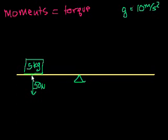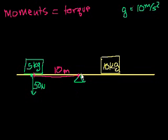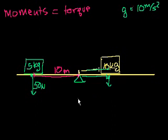And let's say the moment arm distance here is 10 meters. Now let's say I have a 10 kilogram mass and I want to place it some distance d from the fulcrum, or axis of rotation, so that it completely balances the 5 kilogram mass. So how far from the axis of rotation do I put this 10 kilogram mass? The 10 kilogram mass exerts a downward force of 10 times 10, which is 100 newtons.